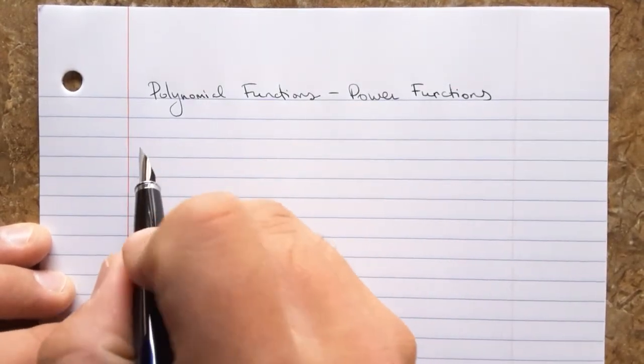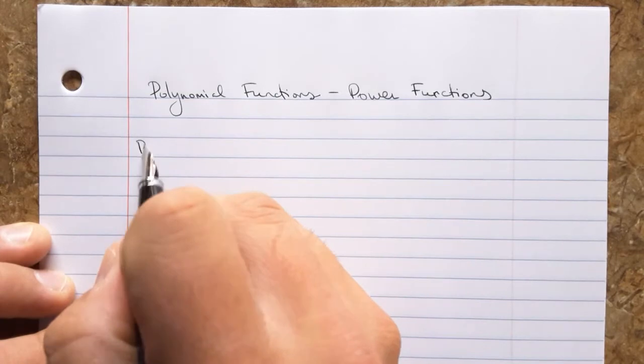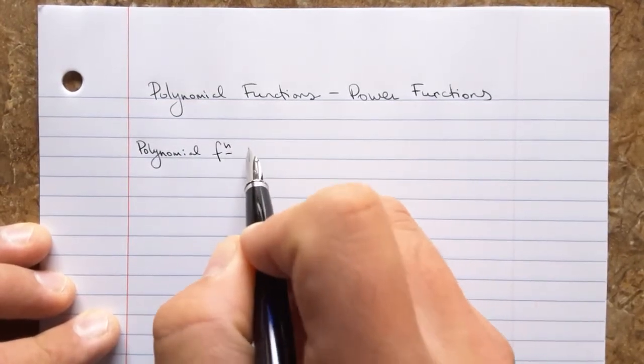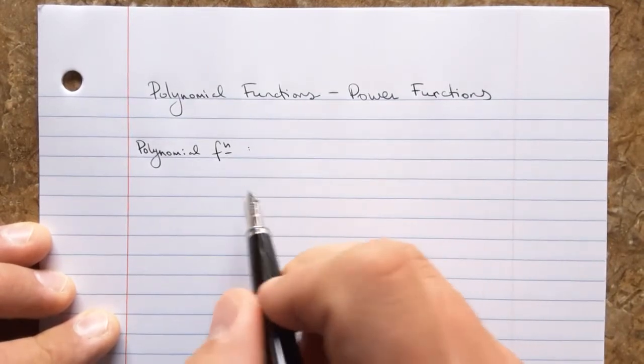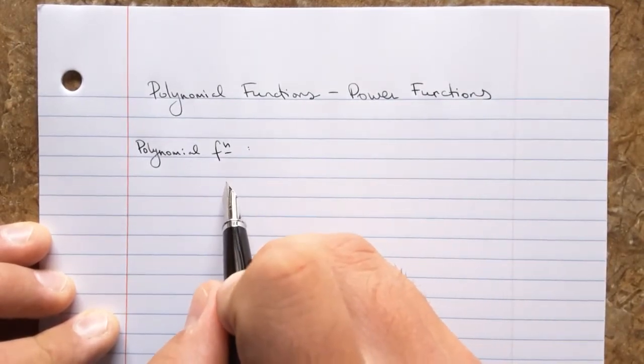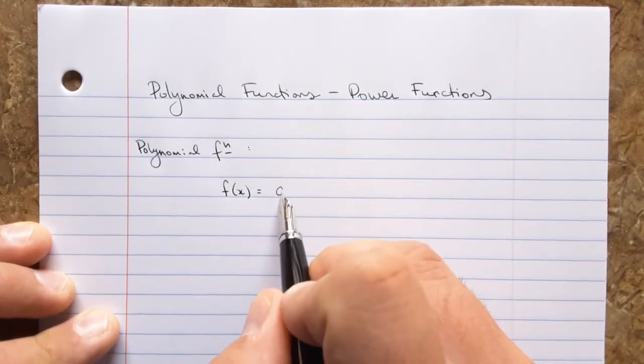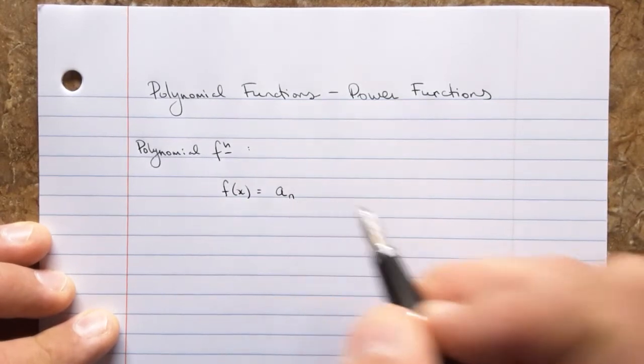Let's first remember what is a polynomial function. A general polynomial function can be described like this. We can call it f of x or p of x, something like that. And it has some degree, n.